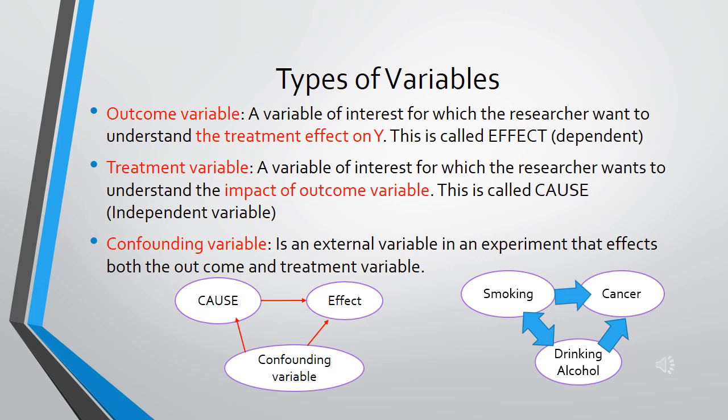In identifying the odds ratio, we have three types of variables. One is the outcome variable — a variable of interest for which the researcher wants to understand the treatment effect on Y, also called the dependent variable. The treatment variable is a variable of interest for which the researcher wants to understand the impact on the outcome variable — this is called the cause variable. We are finding out the odds ratio for the cause and effect, and the influence of the third variable, which is the confounding variable. It is an external variable that has an important effect on both the outcome and treatment variables, and it influences the cause as well as the effect.